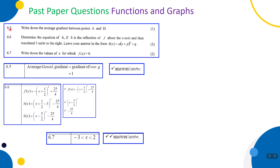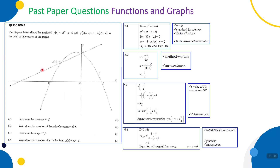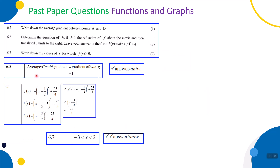6.5, one mark: write down the average gradient between points A and D. Since A and D both lie on the straight line g, the average gradient between them is simply the gradient of that line, which is 1. One mark for the answer.